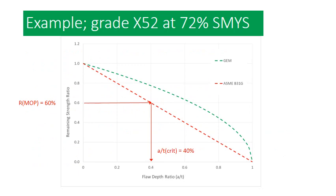Let me give you an example to see how expensive the B31G mathematics can be for a typical pipeline operator. Consider a situation with a grade X52 pipe steel running at 72% SMYS — a pretty common situation for a lot of pipeline operators. If we do the mathematics, the remaining strength limit for this pipeline will be at 60%. Looking at the ASME B31G limit, that would mean a critical flaw depth ratio of 40%. So any corrosion flaw on that pipe that grows to 40% depth — provided it's long enough — will become critical and represents a very serious rupture hazard.